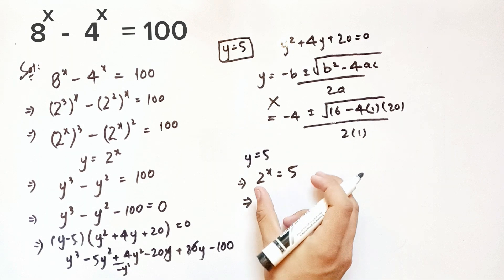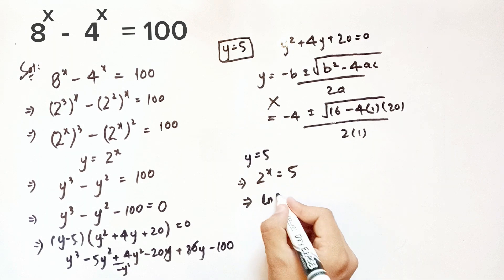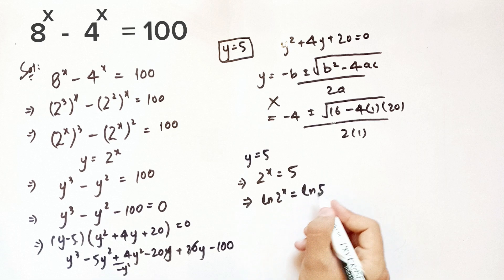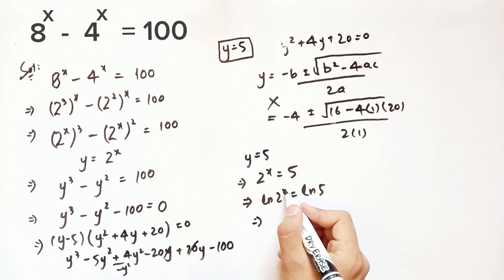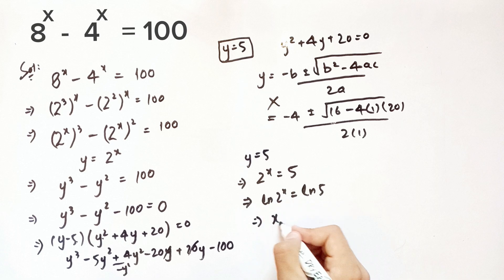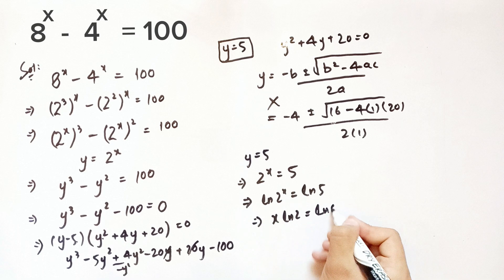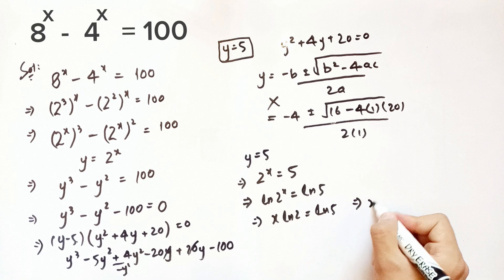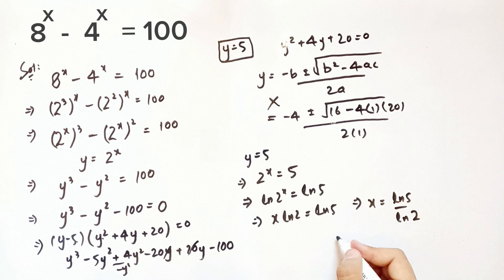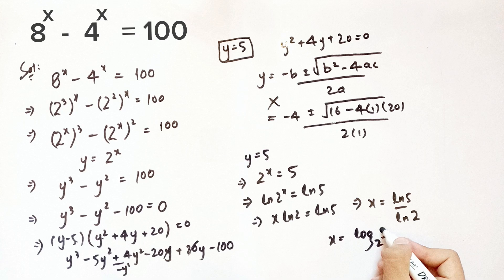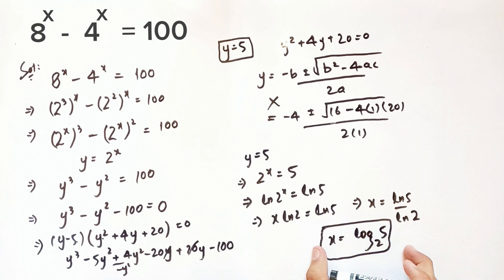Taking the natural log on both sides and using the logarithm property to bring x out, we get x times ln 2 equals ln 5, so x equals ln 5 over ln 2. This can also be written as x equals log base 2 of 5. This is the only real solution for this equation.